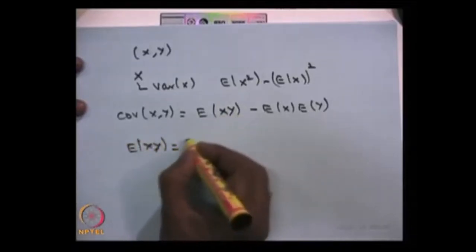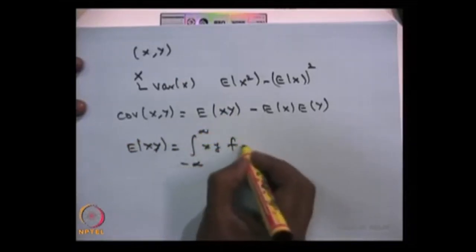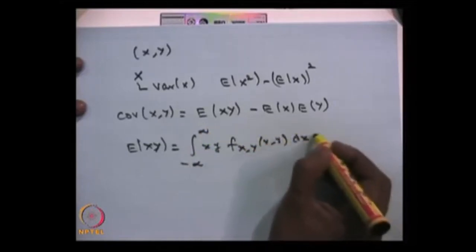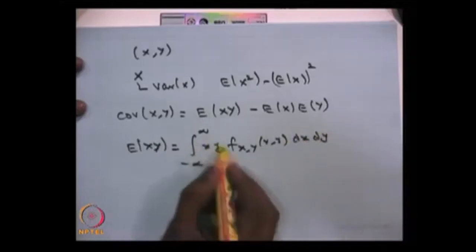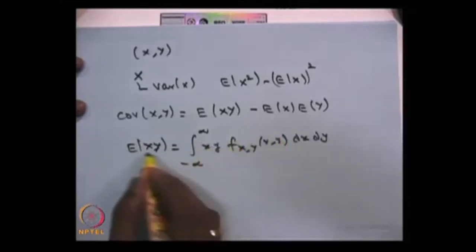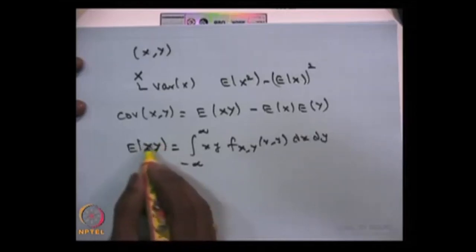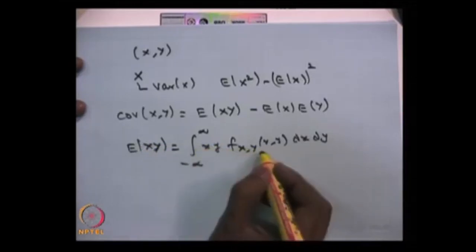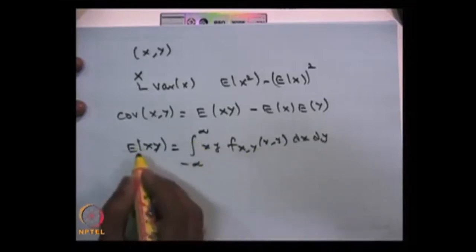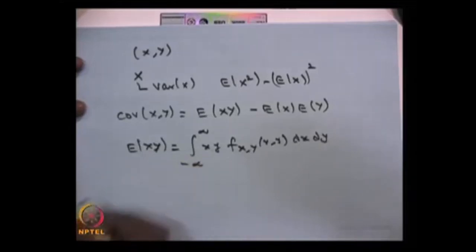If both random variables are continuous, then E[XY] is the double integral of X times Y times the joint probability density function f(X, Y). You do not need to find the distribution of the product XY; you can find the expectation from the possible values and corresponding joint distribution. Provided the absolute value exists, then without the absolute value you get E[XY].